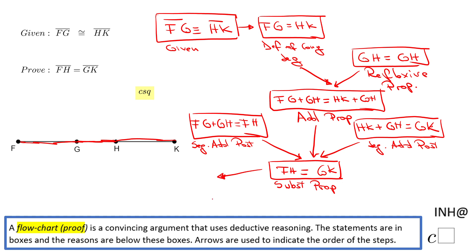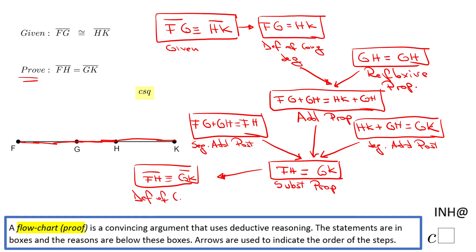One more step. I'm going to say segment FH is congruent to segment GK, which is what we needed to prove. The reason is the definition of congruent segments. And that's it — this is the flowchart for this problem.